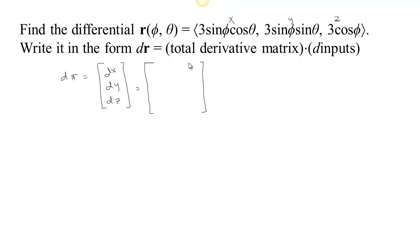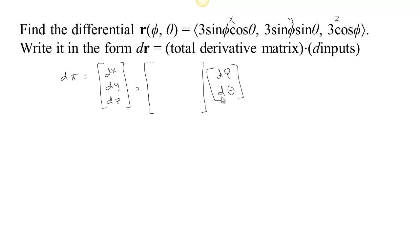And one column for partials with respect to phi and partials with respect to theta. So if we set it up with d-phi and d-theta, then the things in the first column end up multiplying d-phi, so they should be derivatives with respect to phi. The things in the second column end up multiplying d-theta, so they should be derivatives with respect to theta. So we get the total derivative by looking at that.